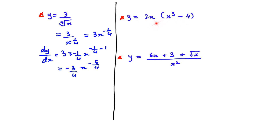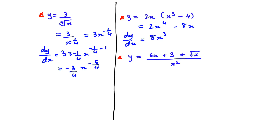Here we have a bracket, so first we expand. We multiply 2x by x³ and 2x by −4, giving 2x to the power of 4 minus 8x. Now differentiate: 2 × 4 = 8 and 4 − 1 = 3, so the first term gives 8x³. For −8x, the differentiation is the number before x, which is −8.